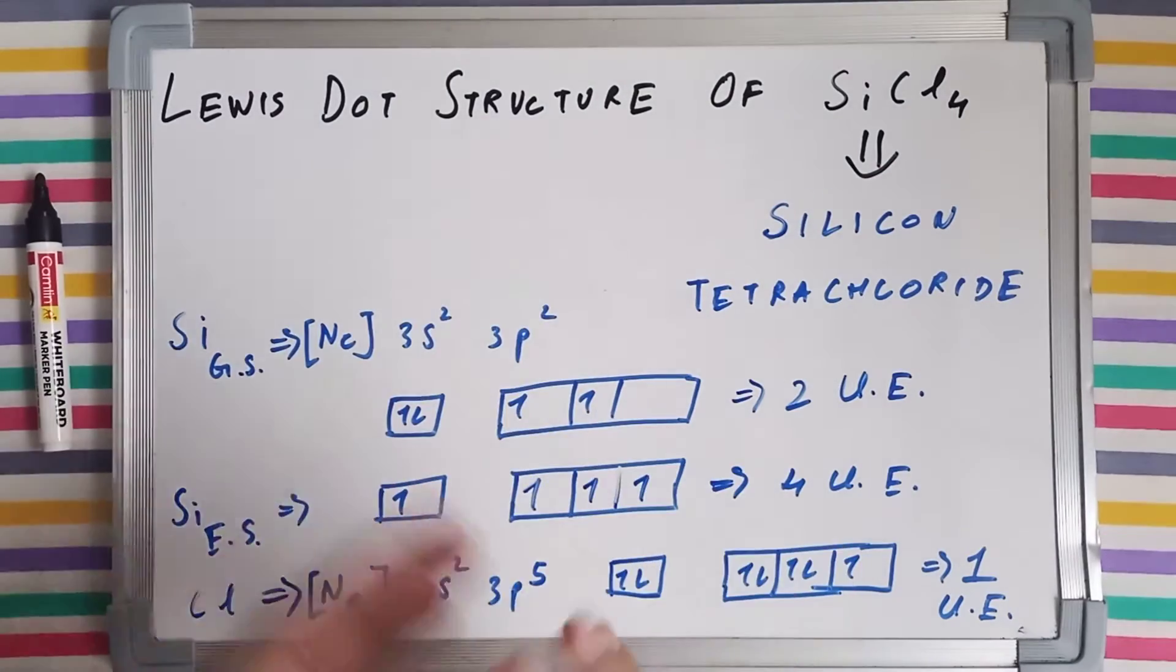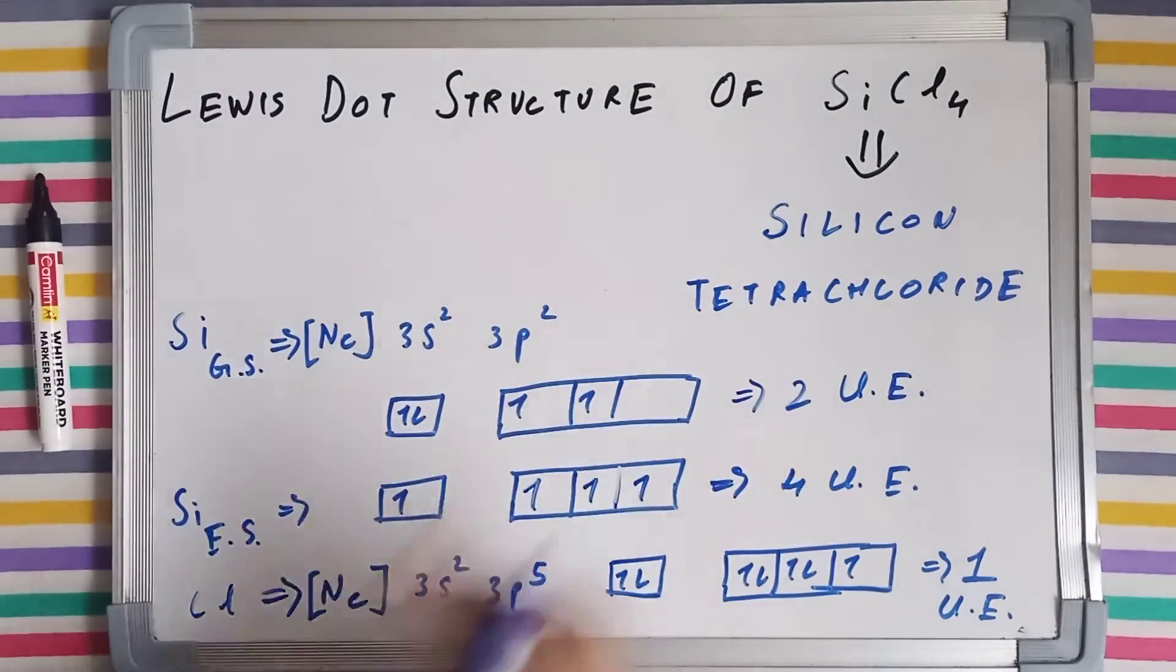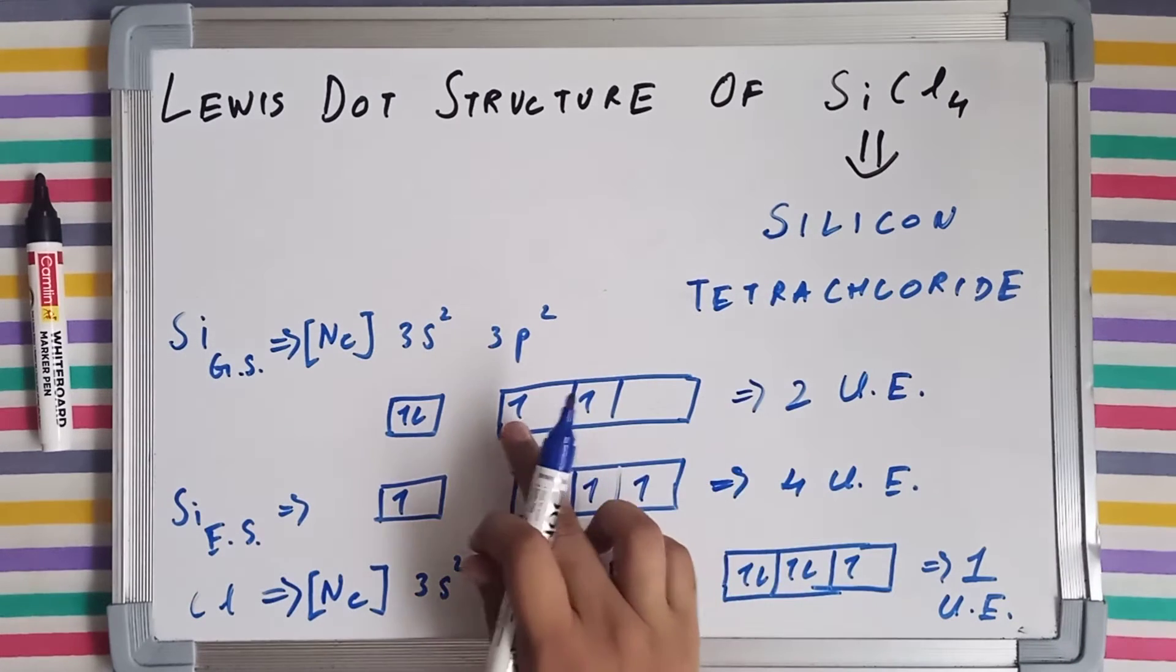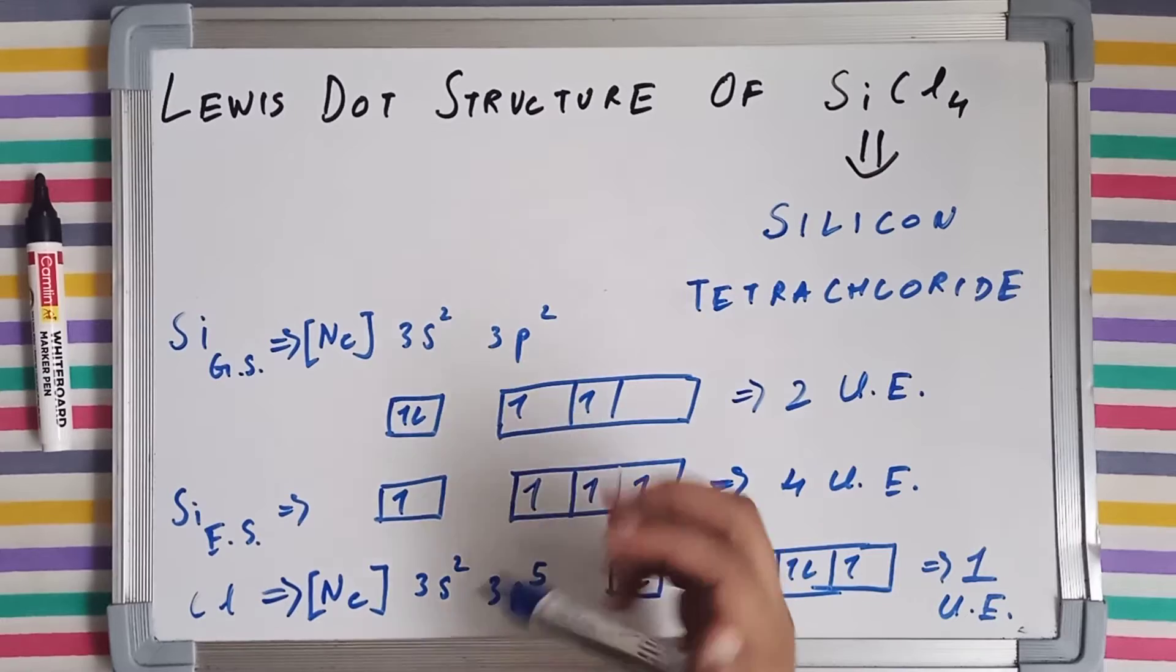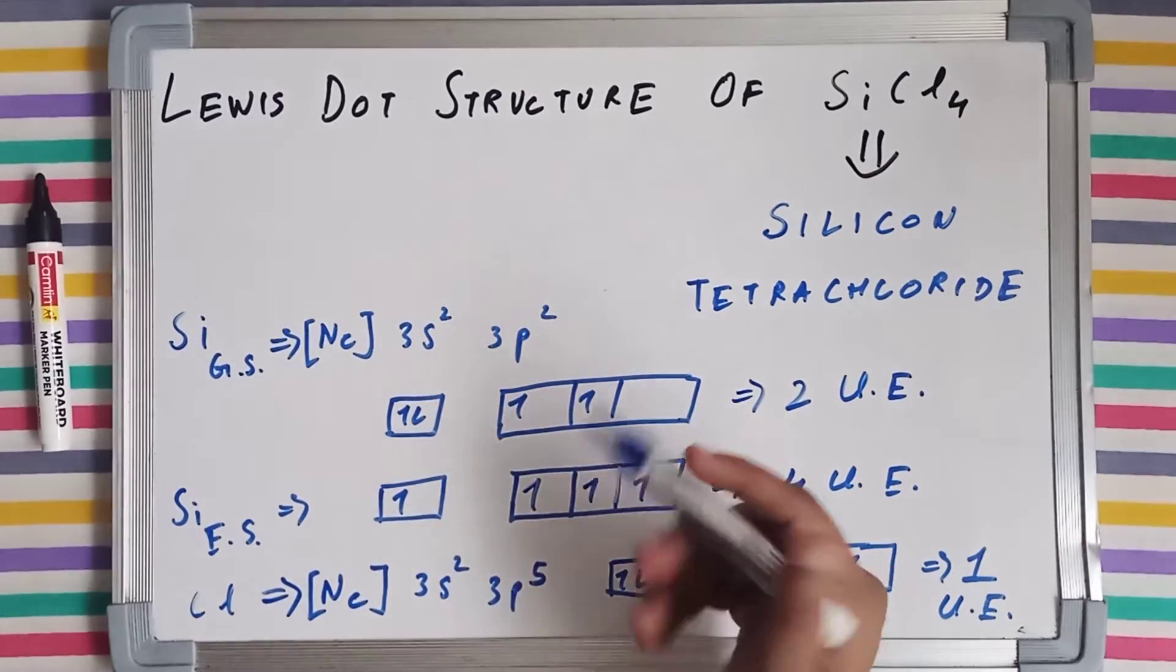So how will it make four bonds? In this case, it is going to make just two bonds because there are only two unpaired electrons. Hence, four bonds are not possible.